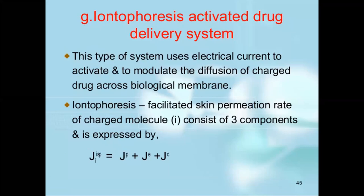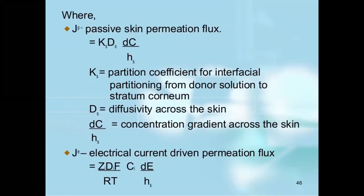This type of system uses electrical current to activate and modulate the diffusion of charged drugs across the biological membrane — this is iontophoresis. Iontophoresis facilitates skin permeation rate of charged molecules. It consists of three components expressed by J, which equals JP plus JE plus JC. JP is the passive skin permeation flux, given by the equation involving Ks (partition coefficient for interfacial partitioning from donor solution to stratum corneum), the diffusivity across the skin, and the concentration gradient across the skin. JE is the electrical current-driven permeation flux.